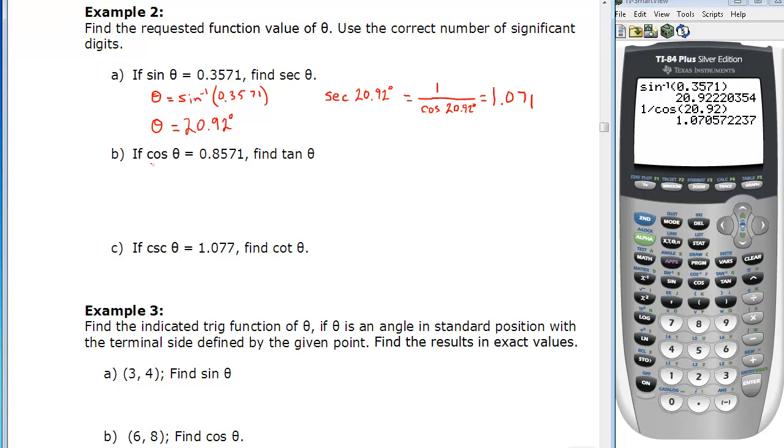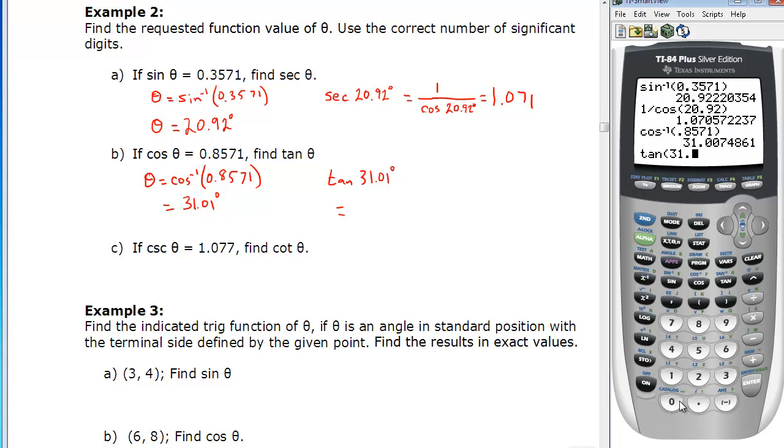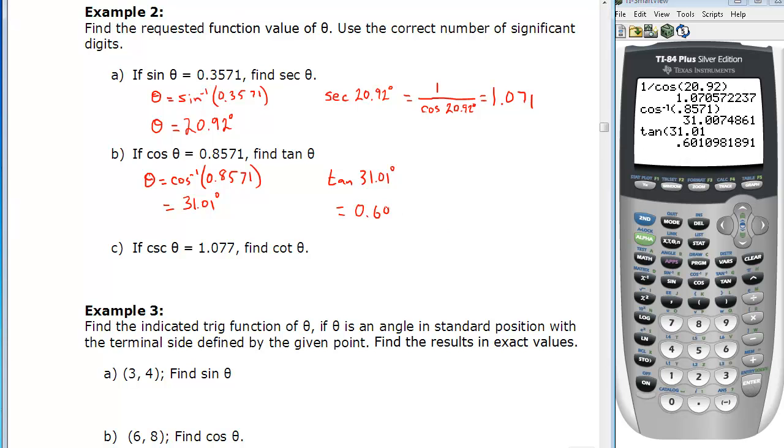We'll continue and do the next two now. So given the cosine of an angle is this. So to find the angle first, we take the inverse of the ratio. And that's second function cosine 0.8571, close bracket. That gives us 31.01 degrees. So there's our angle. Now the tangent of that angle, 31.01 degrees, is equal to the tan of 31.01, which gives us 0.6011, rounded again to four significant digits.